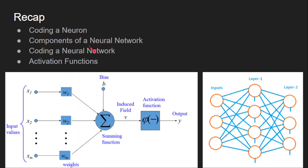We started our course with an introduction to neural networks and had an in-depth session about a single neuron and the operations that happen inside it. These are the inputs coming to this neuron. Each neuron has some weights associated with it, and the number of weights depends on the number of inputs. So here I have m inputs, which is why I have m weights, and every neuron has one bias. The operation that happens is the weighted sum, and once we get it, we pass through an activation function to get the final output, which is then passed to the next layer.